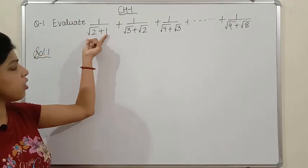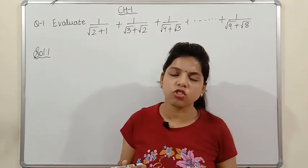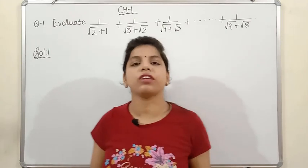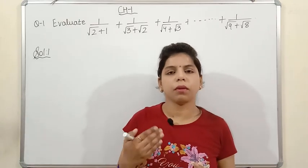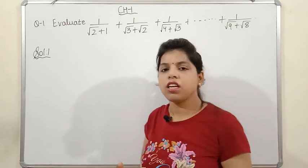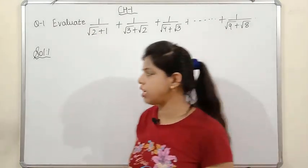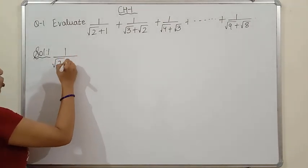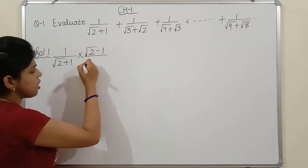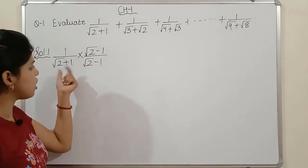Your first step is to rationalize. We will do this at the top of each term. Here, if there is a plus sign, you take minus. So for the first term 1/(√2+1), we multiply and divide by (√2-1). This step is called rationalizing. The reason is: when you have a denominator with a plus or minus, it follows the identity (a+b)(a-b) = a²-b², which removes the square root and makes the denominator rational.